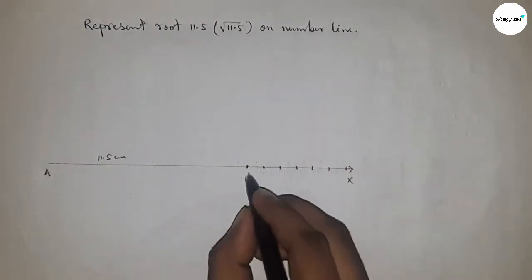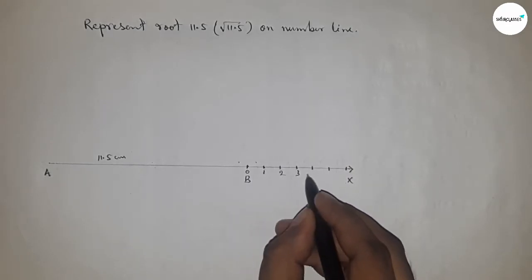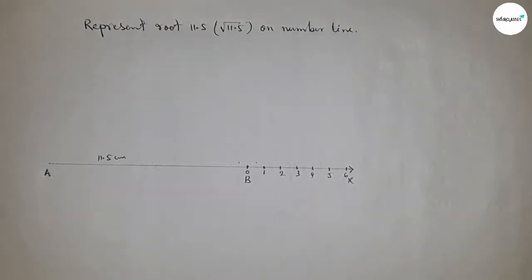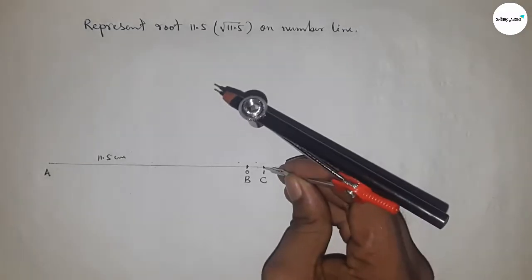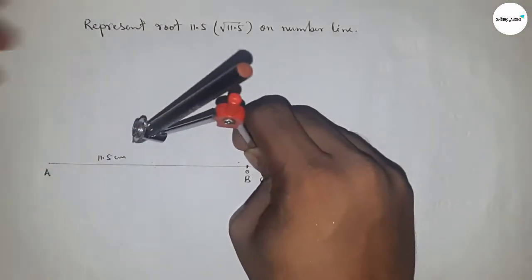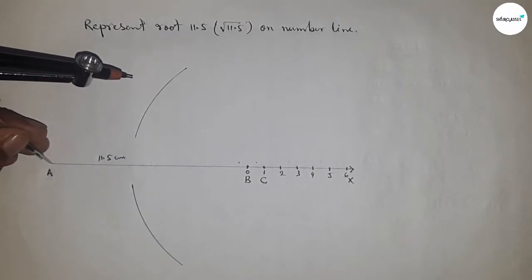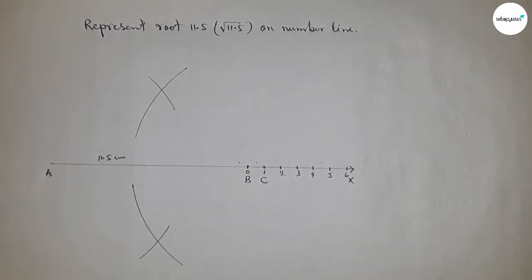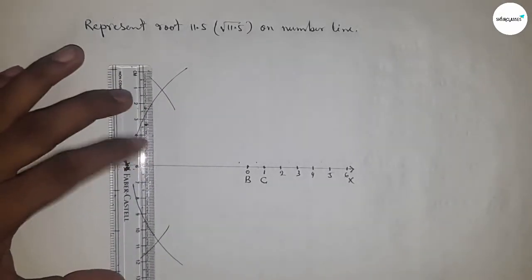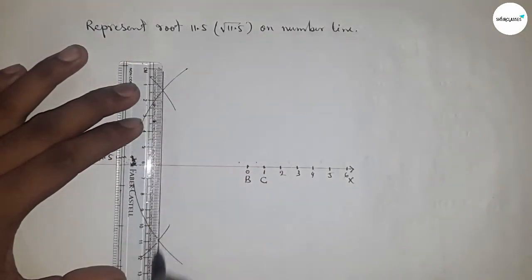So this is 0, 1, 2, 3, 4, 5, 6, and so on. Take point C here. Now we have to bisect the line AC. Put the compass here, take greater than half of AC, and draw an arc. With the same length, put the compass here and cut here. Now join these points.